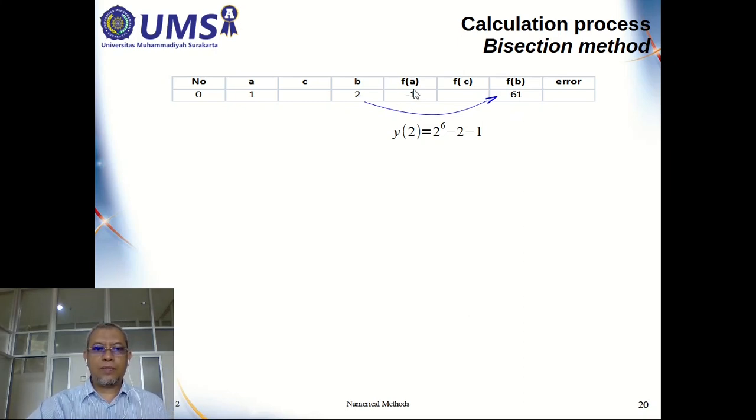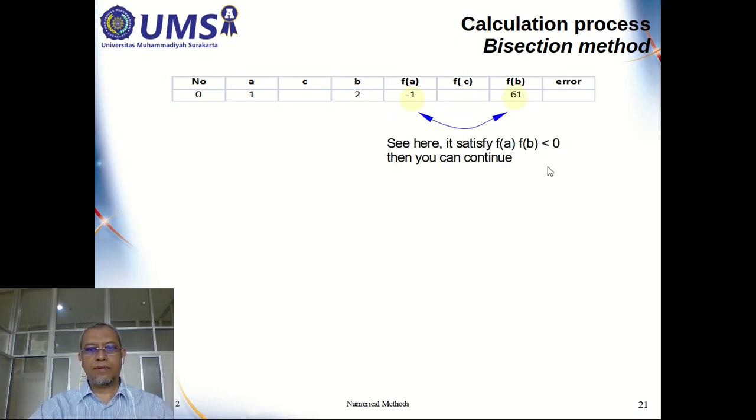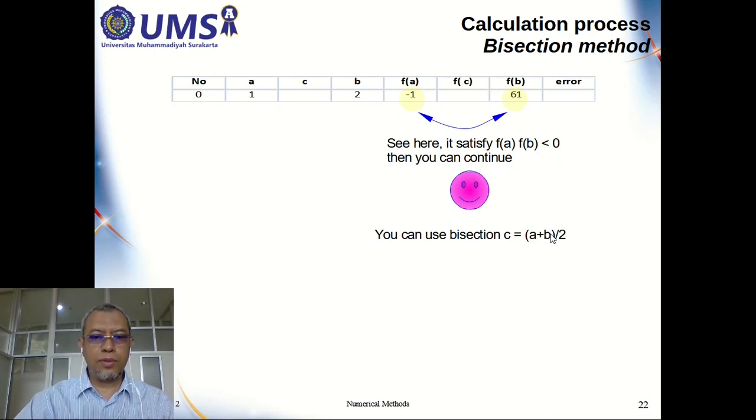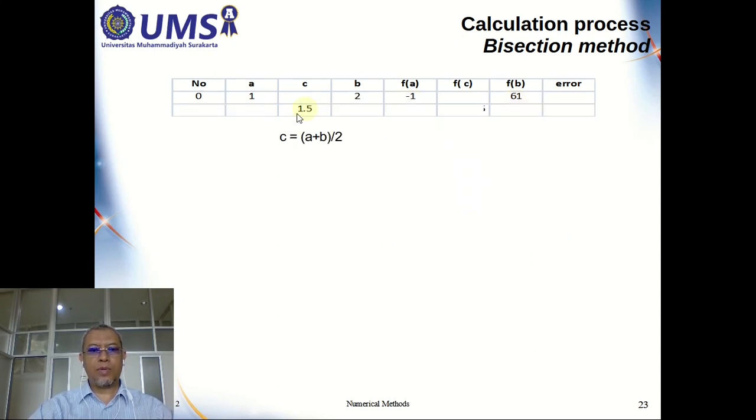Okay, have a look. FA minus 1, FB 61. So it means 1 is negative, another one is positive. Either way, as long as the multiplication of 2 will be negative, then you will be happy. It means A and B is okay. Then you can continue. If the value of the function are the same sign, means minus minus or positive positive, then you cannot use. You cannot continue. Then you have to find another value. Once you have this, so it means the result will be in between. Then you calculate in between 1 and 2 is 1.5.